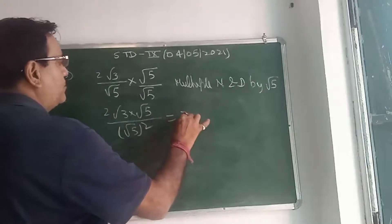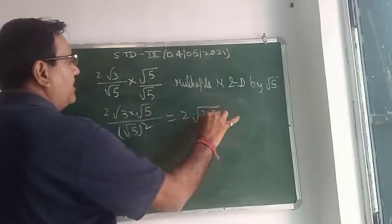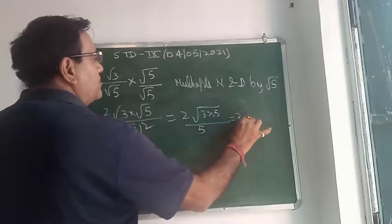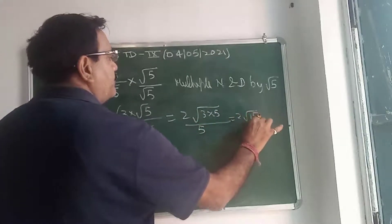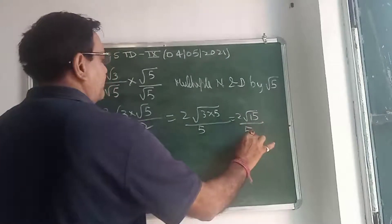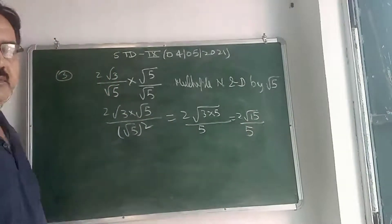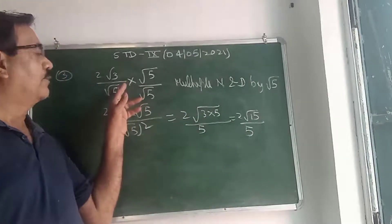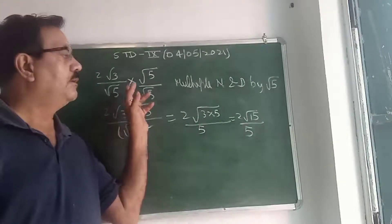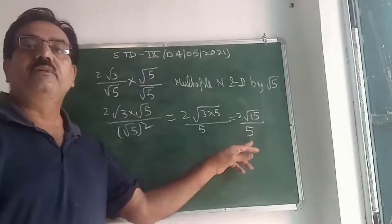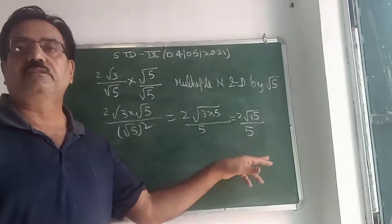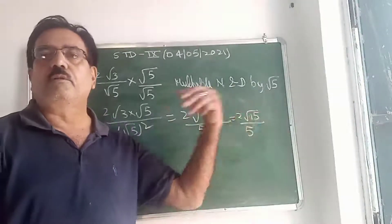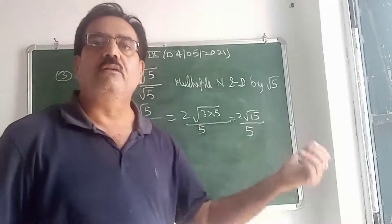This becomes 2√15 divided by 5, since √5 × √5 = 5. Now see — in the question the denominator was irrational, but now it has been converted into a rational integer. That is how we rationalize the denominator.